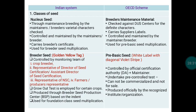Under the OECD scheme, Pre-Basic Seed carries a white label with diagonal violet stripes and is controlled by the official certification authority. Unlike Breeder Seed in India where monitoring is by breeders, Pre-Basic Seed maintenance is taken over by officials. This material is not used for commercial purposes or sale — it is used for Basic Seed multiplication.